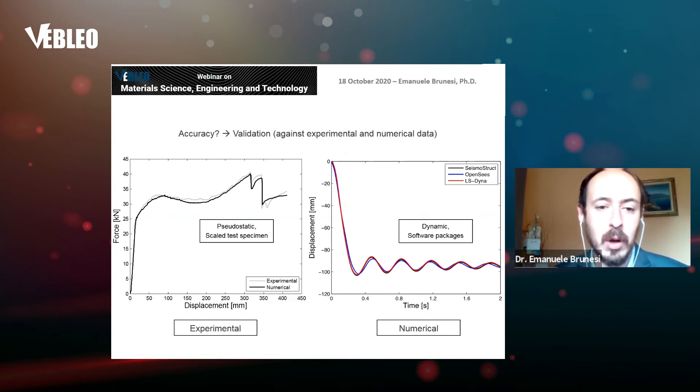One might argue, what is the accuracy of your structural models? We decided to take experimental data available in the literature to test model accuracy. You can see a comparison between experimental test data obtained by other researchers for a scaled test specimen and our numerical predictions in black—there is quite good accuracy. We also compared software packages. You can see a comparison between three different softwares: SeismoStruct, OpenSees, and LS-Dyna, which is a general-purpose finite element software. Again, quite good accuracy.